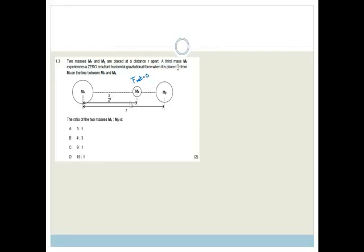Now it says two masses, Mx and My, are placed the distance R apart. A third mass, Mz, experiences zero horizontal gravitational force. So this F net is zero. When it's placed three quarters of R away. So that's three quarter R, so then obviously this is one quarter R. The ratio of the two masses is what?